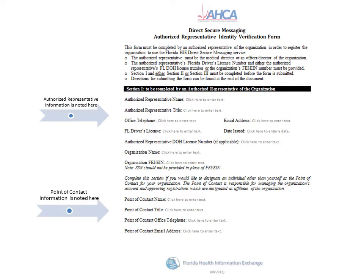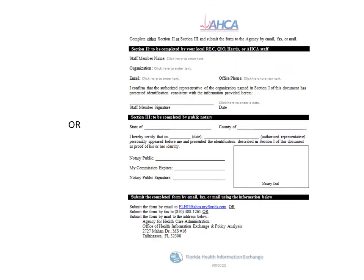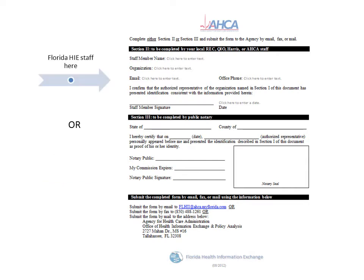The point of contact is responsible for making sure that only appropriate staff have Direct Secure Messaging accounts. They are designated the role of adding new users and deleting users that no longer should have access to the service. If the point of contact information is not completed, the authorized representative will automatically assume this role. The second page of the Identity Verification Form must either be notarized or signed off on by staff authorized by the Florida Health Information Exchange. Authorized staff include representatives from your local Regional Extension Center, Florida's Quality Information Organization, FMQAI, Harris Corporation, or Agency for Healthcare Administration staff.